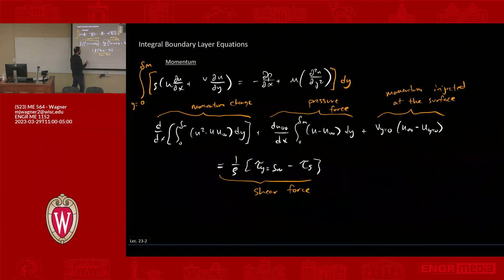So let's say you have external flow. Let's say for some reason the flow is slowing down as it proceeds in the x direction.